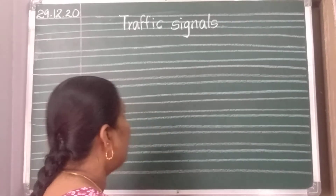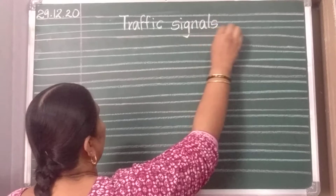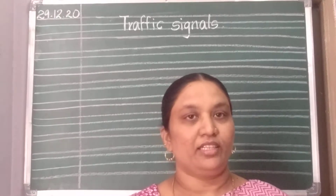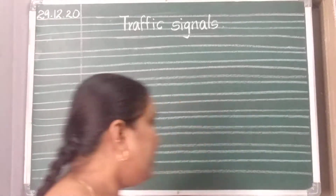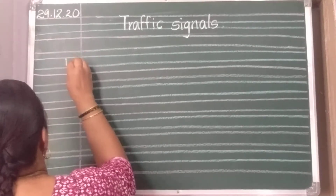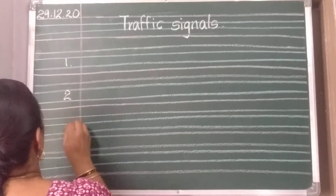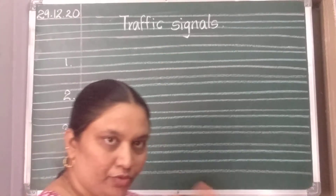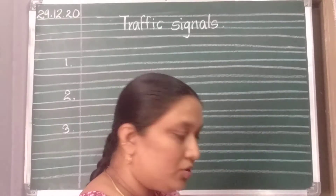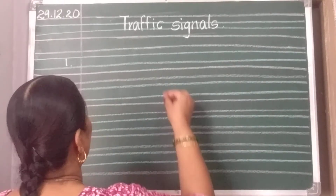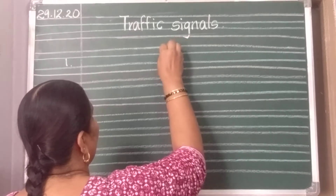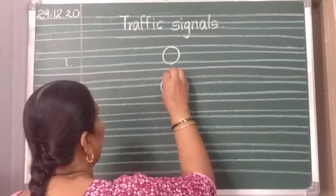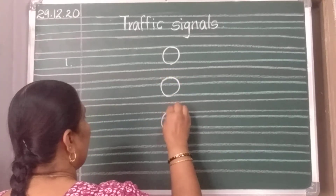Underline it with a red crayon. How many lights are there in the traffic signals? Three. So write one, two, and three. In the middle of the paper, fold the paper to get one line in the middle. In the middle, you should draw three circles — three small circles, like this.